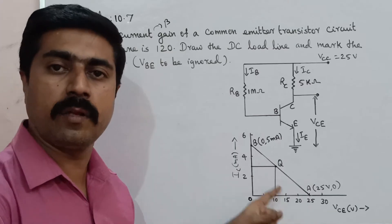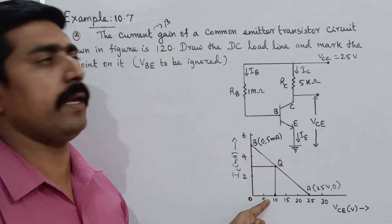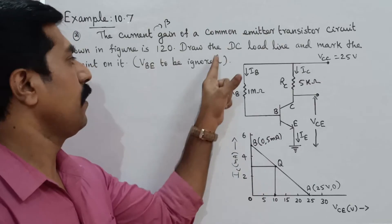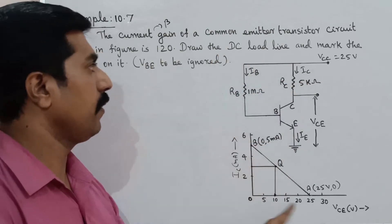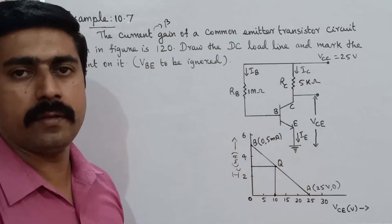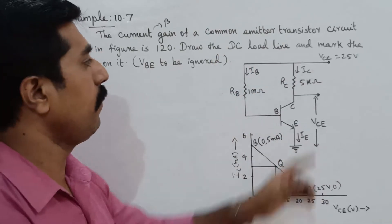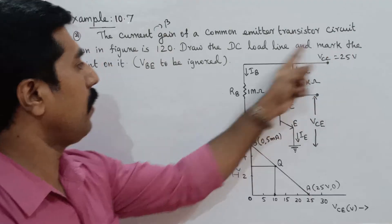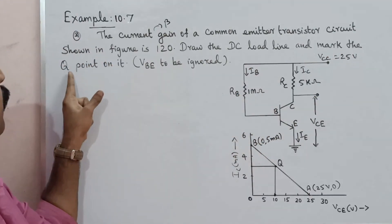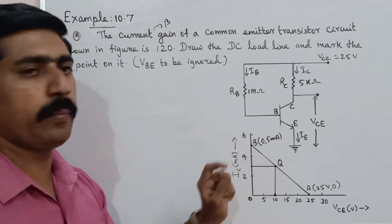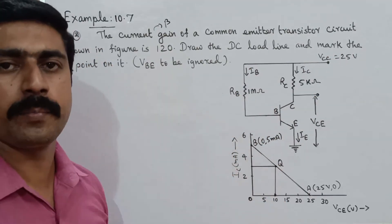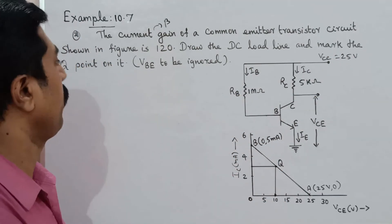Draw the DC load line and mark the Q point on the load line.